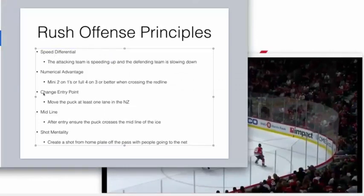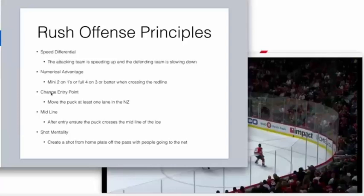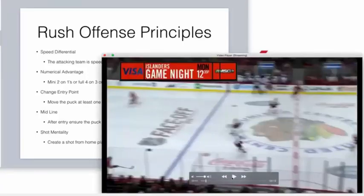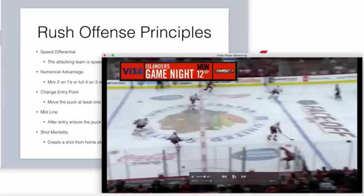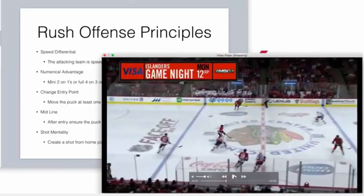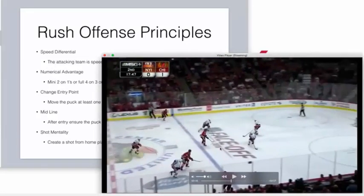Changing the entry point is one of the two biggest problems in most leagues, especially female hockey, and any teams struggling to create chances off the rush. This means moving the puck at least one lane in the neutral zone. There are three lanes on the ice: outside the dots, between the dots, and dot to boards. We want the puck to change lanes. Instead of this guy getting the puck and keeping going the same way, he moves it — now they've changed lanes, and Kane has an option in one lane and an option in another.